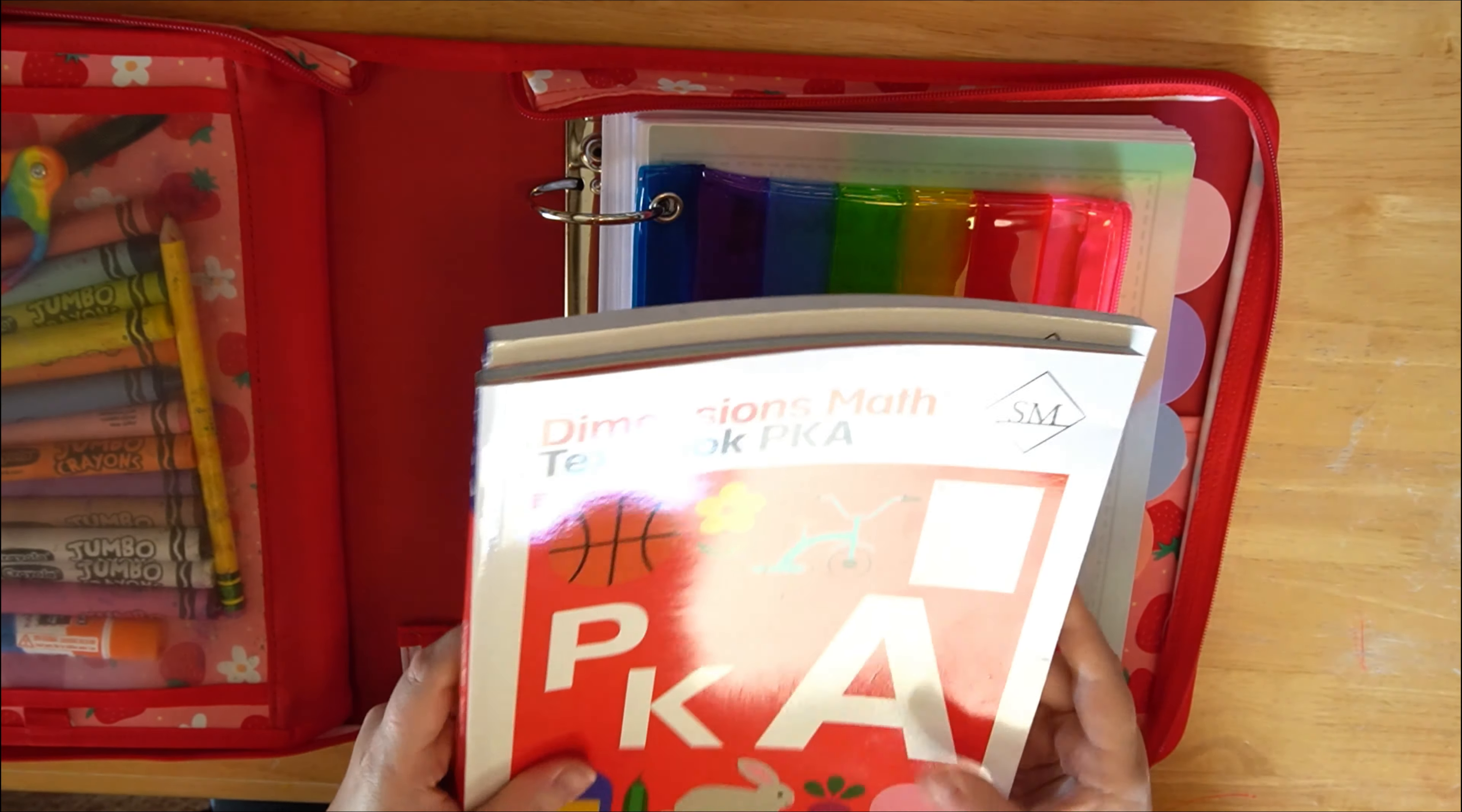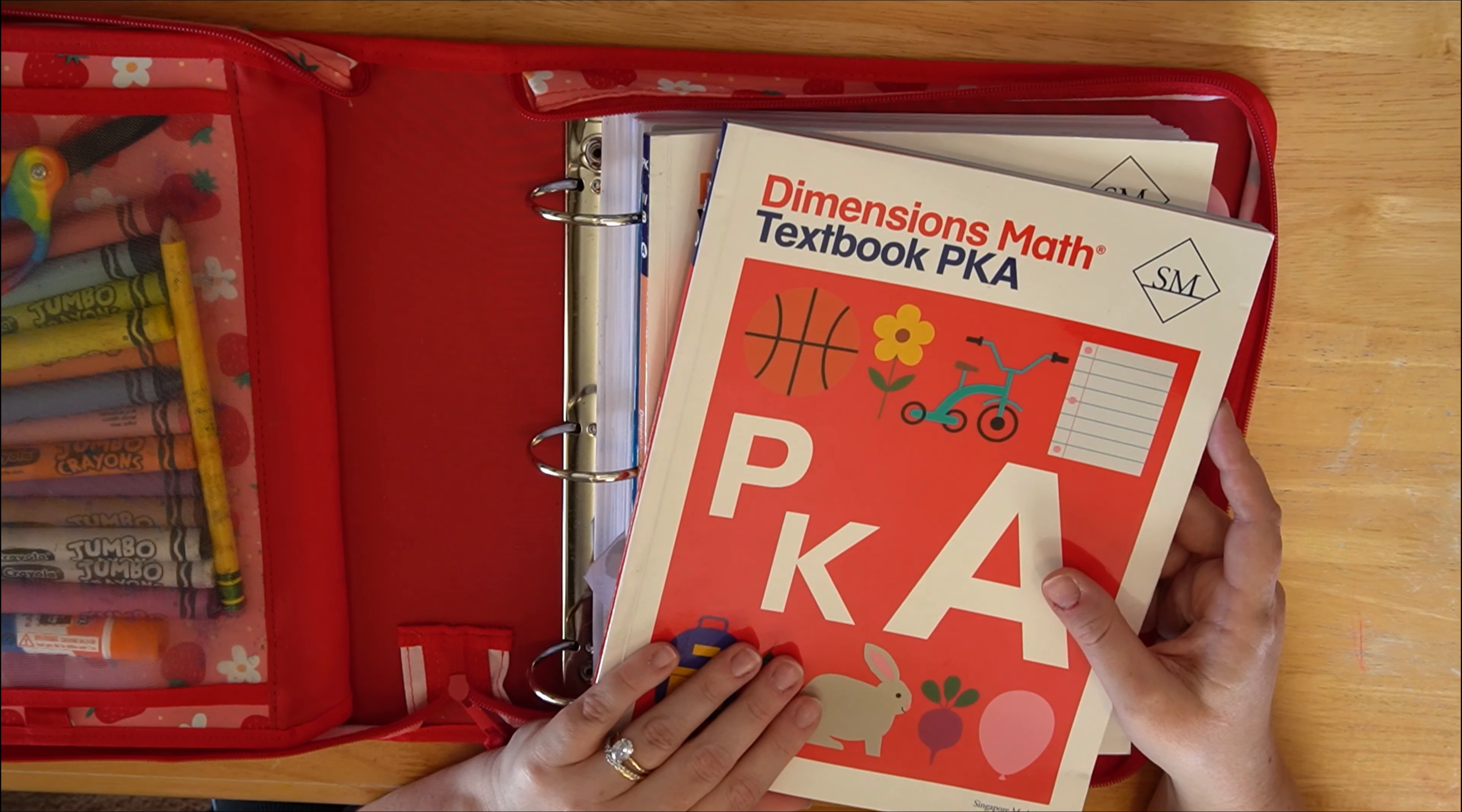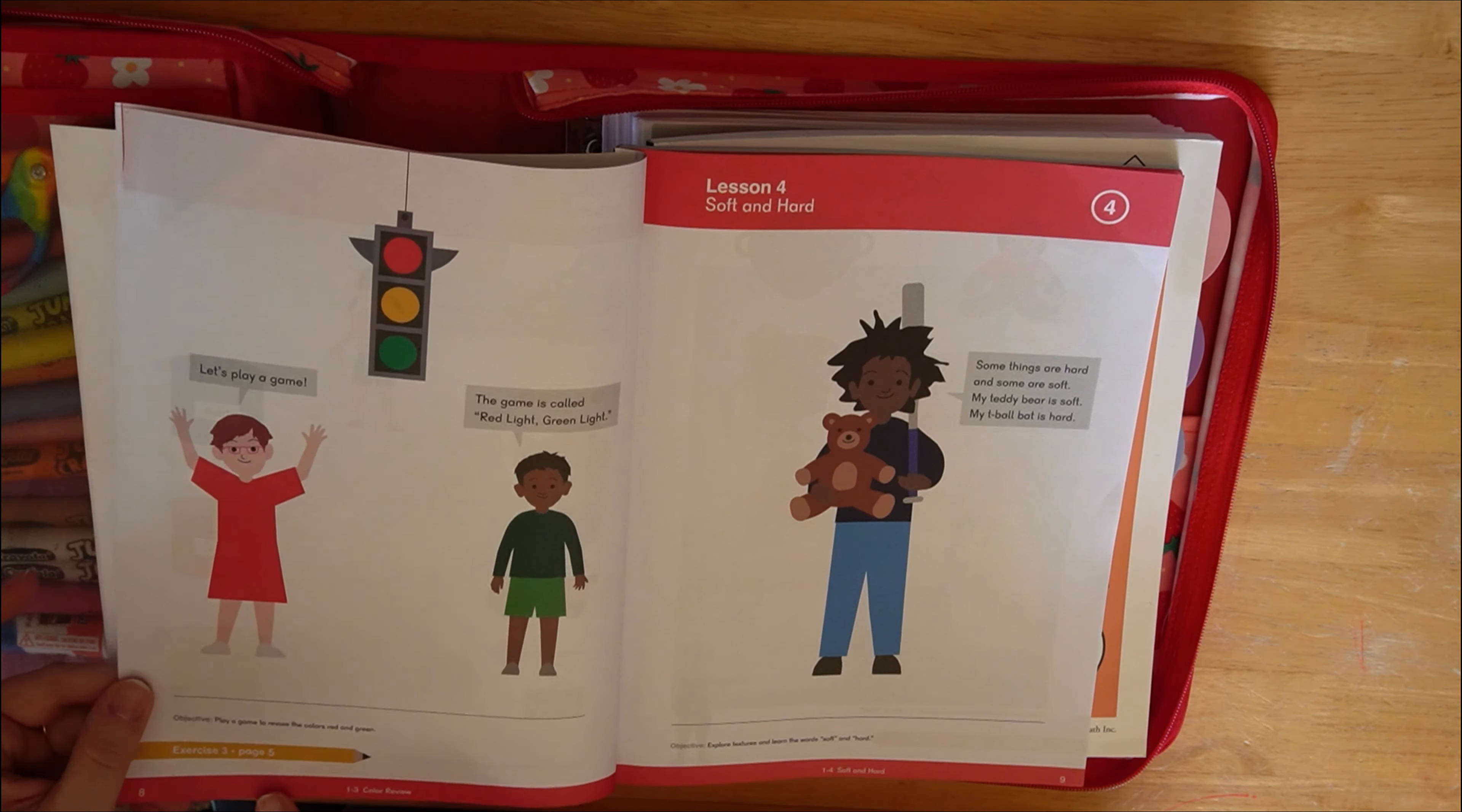And then after that, we typically go into math, which we keep right here in this pocket. So we use Dimensions, Singapore Dimensions Math. We love this. So I accidentally ordered the wrong one. I should have ordered KA and KB. But nonetheless, this is what we're working with. So what it typically looks like is, you know, start a lesson and then you go until you see the pencil down here.